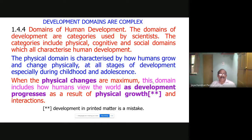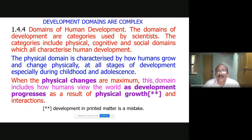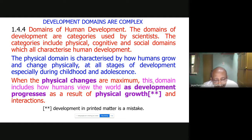Development domains are complex. Section 1.4.4 — domains of human development — the domains are categories used by scientists, including physical, cognitive, and social domains. Physical growth is easy — at what age, what will be the size, the weight — all these you can understand. But cognitive means how growth takes place mentally. For a 30-year person, how will be his cognition scientifically as a benchmark? Then the social domain — what social skills a student should acquire. There are measurements also — practically you will be studying Vineland Social Maturity Scale. You can combine theoretical knowledge with practical experience.